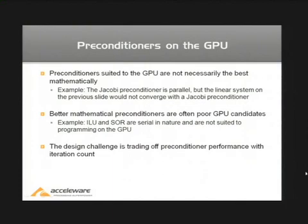Preconditioners that are suited to GPU, expressing themselves inherently in a parallel way, are not necessarily the best preconditioners mathematically. That's the problem here. For example, Jacobi, which is a very, very parallel preconditioner, is not a good preconditioner. So even though it's parallel and fast, it's not very useful. Contrary, preconditioners that appear to be much better in practice, like ILU and SOR, are serial in nature, and that poses a challenge for how to actually make them effective on GPU.